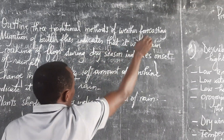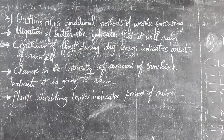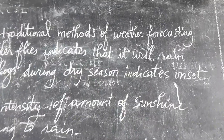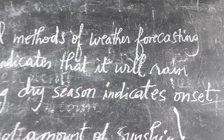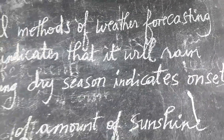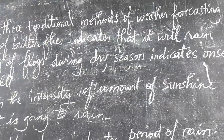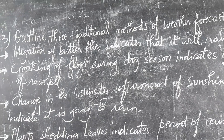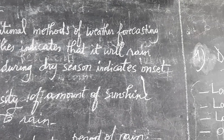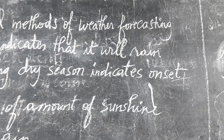When we talk of weather forecasting, it refers to the prediction of the condition of the atmosphere of a given place, especially within a 24-hour period. So the question is asking us to give the traditional methods of predicting the condition of the atmosphere.